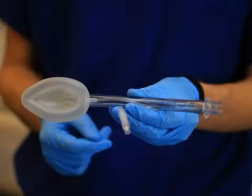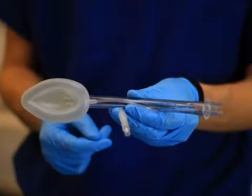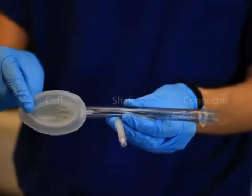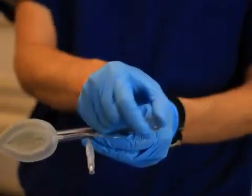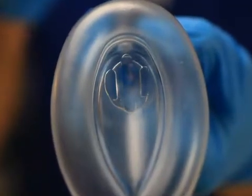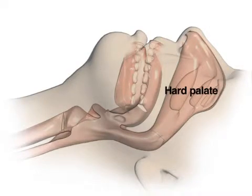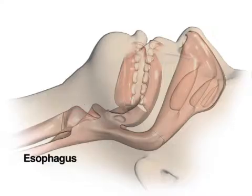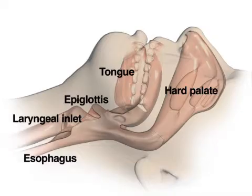An adult-sized laryngeal mask airway is a flexible breathing tube of approximately 25 centimeters in length with an inflatable bladder or cuff on its distal end. The proximal end has a standard 15-millimeter connector that allows attachment to any ventilation system. Air exchange occurs through the aperture on the distal end of the tube. This illustration shows the tongue, hard palate, epiglottis, esophagus, and laryngeal inlet. Review of these structures is helpful for understanding proper placement and potential difficulties.